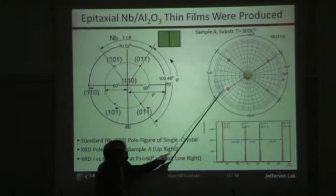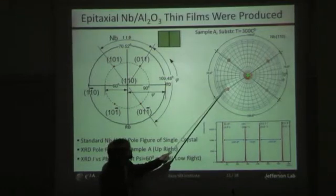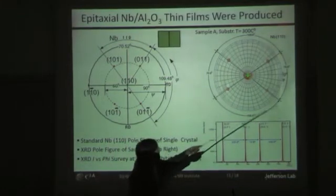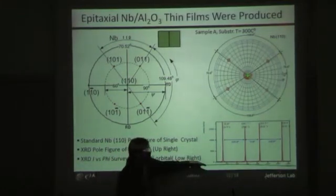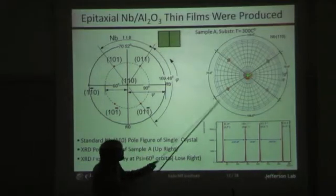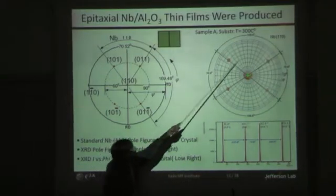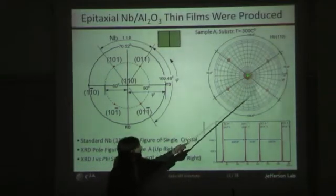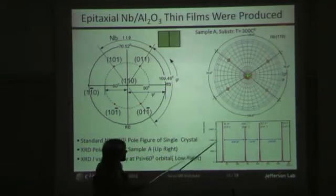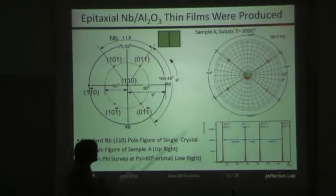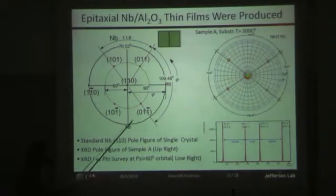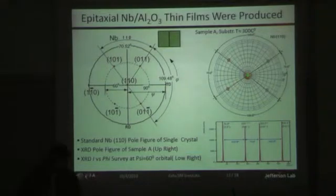Here we're taking the 60-degree arc and laying it out as a line. What you're seeing are the peaks corresponding to these four nearest neighbors, and you can see that the angles are agreeing very well with what we'd expect from theory for a 110 single crystal Niobium sample.